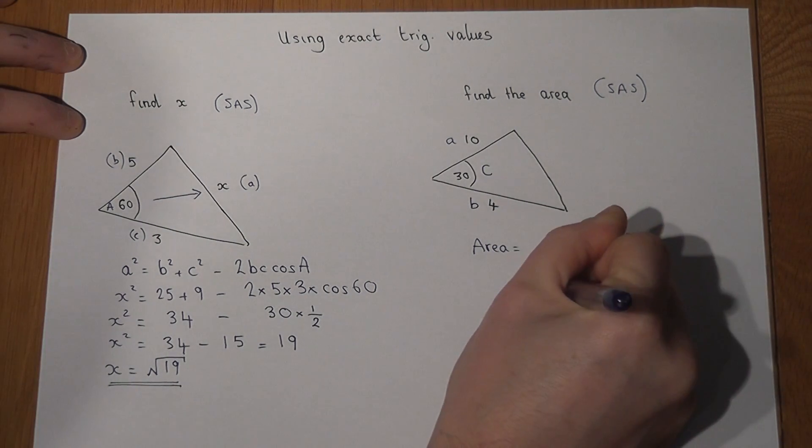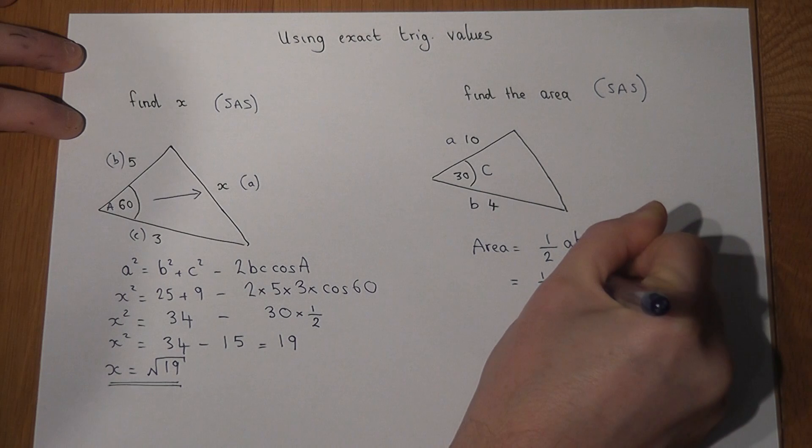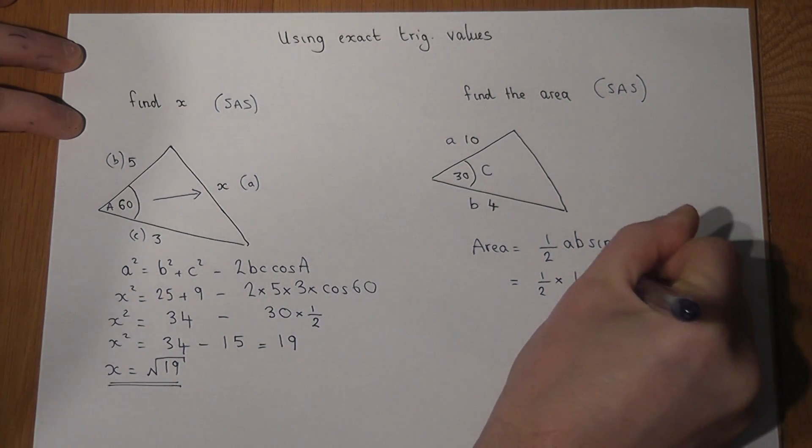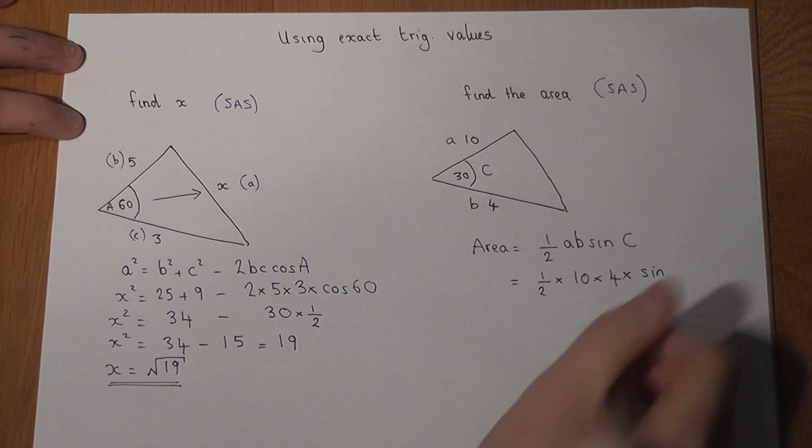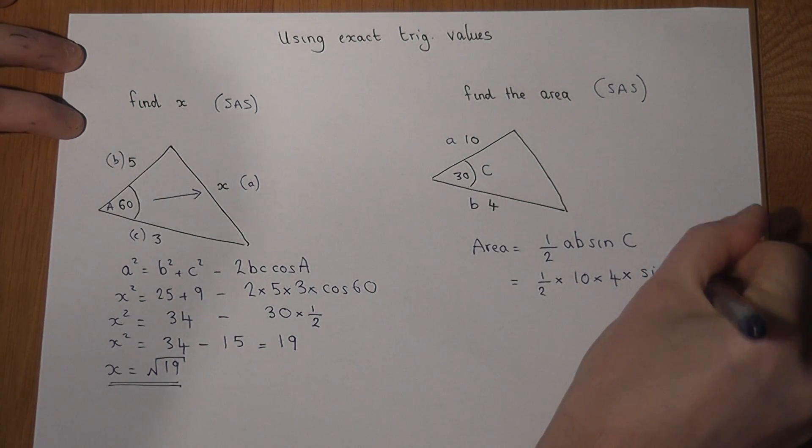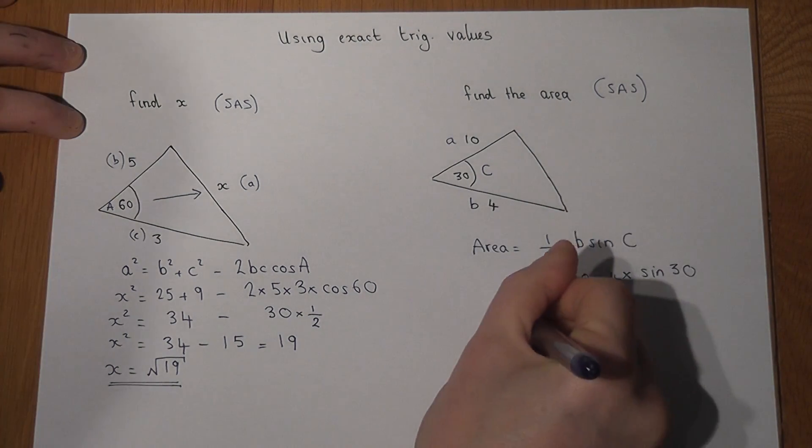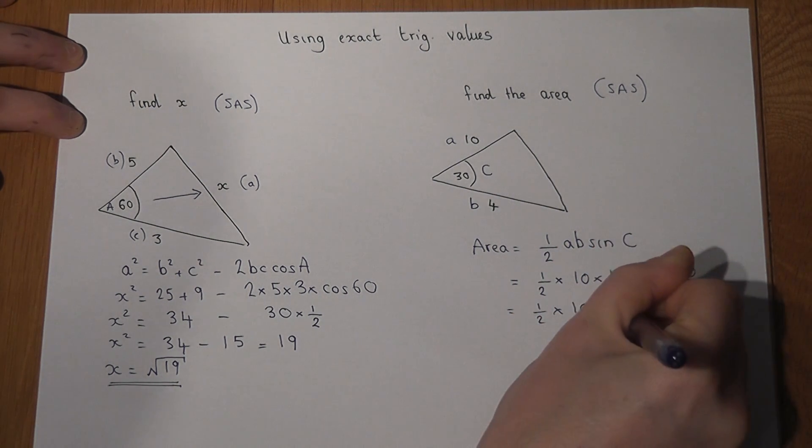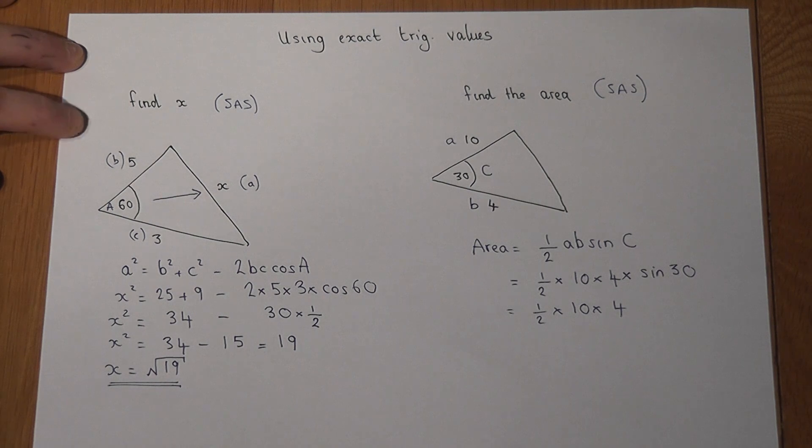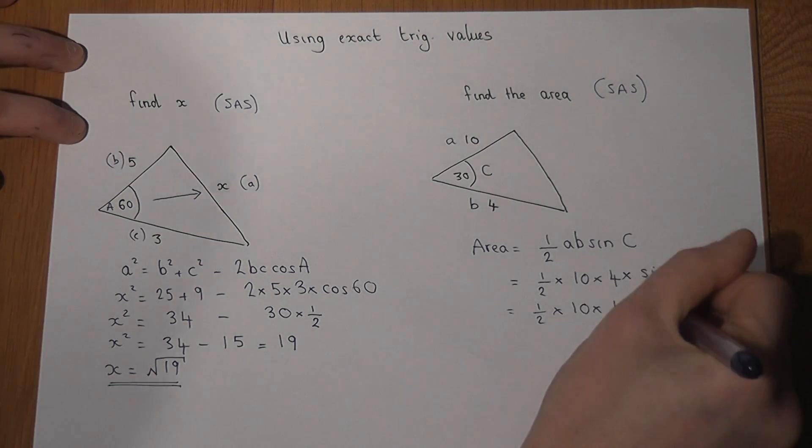So we have to work out a half lots of a lots of b lots of sine the angle, which in this case is 30. And again, this now requires us to know the value of sine 30, which actually equals a half.